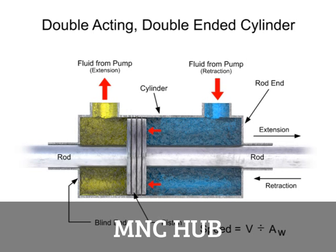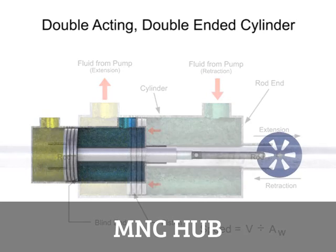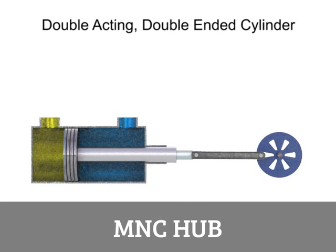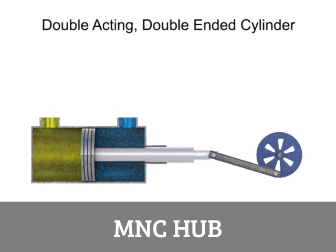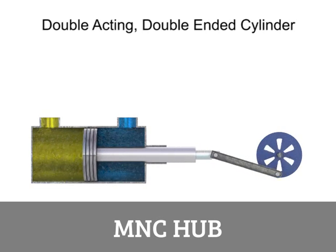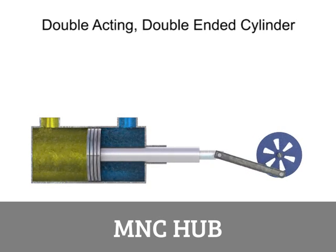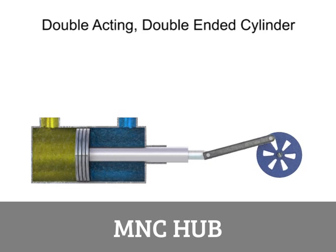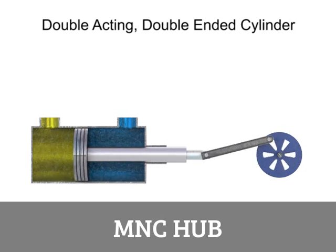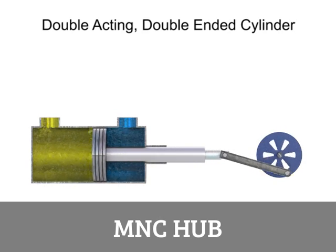Due to their simple design, cylinders are used more often than any other type of actuator for industrial applications. Although their motion is linear, it can be converted to rotary motion by levers, racks and pinions, or other means, making them one of the most versatile types of actuator.